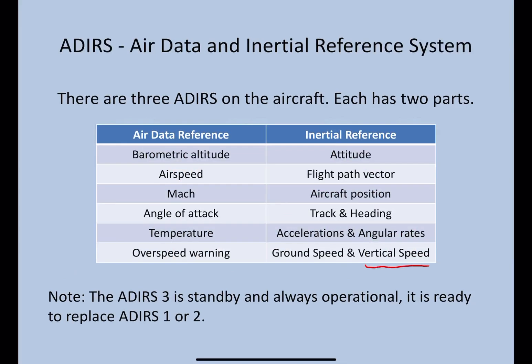The vertical speed, however, is primarily an inertial reference function. But if for some reason the inertial reference fails, it also has a backup from the air data reference to show you vertical speed.